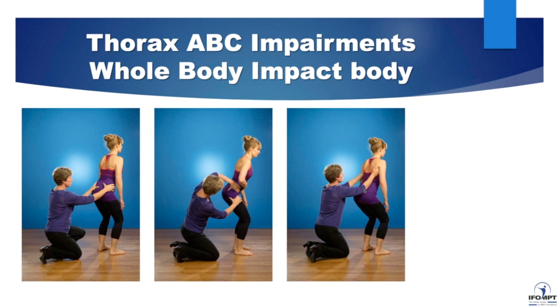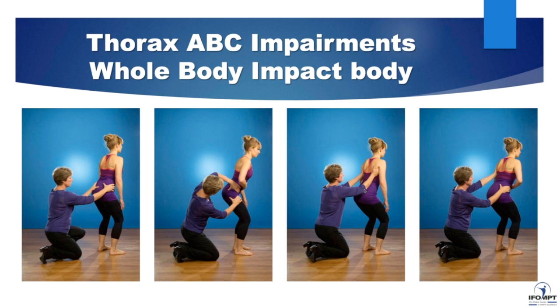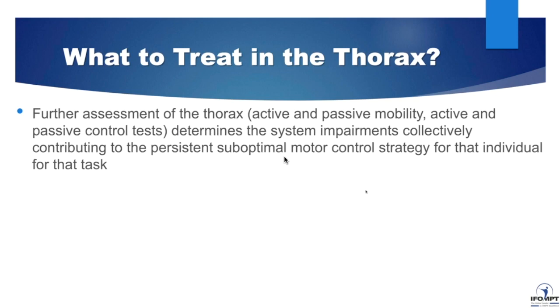Does it always work? No. Are we always right? No. Nothing is. But at least it's not a guess. What we do is play the impairments off one another — apply compression to the pelvis and see what happens to the hip alignment, correct the alignment of the hip and look at the effect across the greatest number of impairments in the body. That tells you the body region that you need to start treating. But once you've found what we call the driver — the area of the body that needs treatment first — you need further assessment of that area using active and passive mobility tests and active and passive control tests. The interpretive reasoning of these tests helps to determine the underlying system impairment collectively contributing to this suboptimal motor control strategy for that individual for that task.